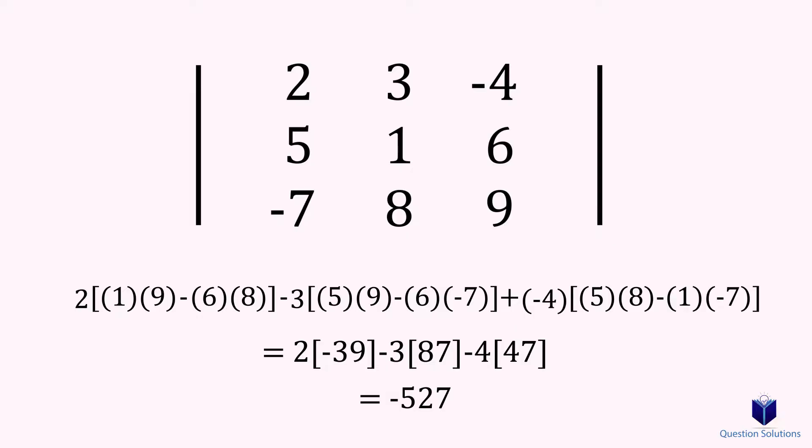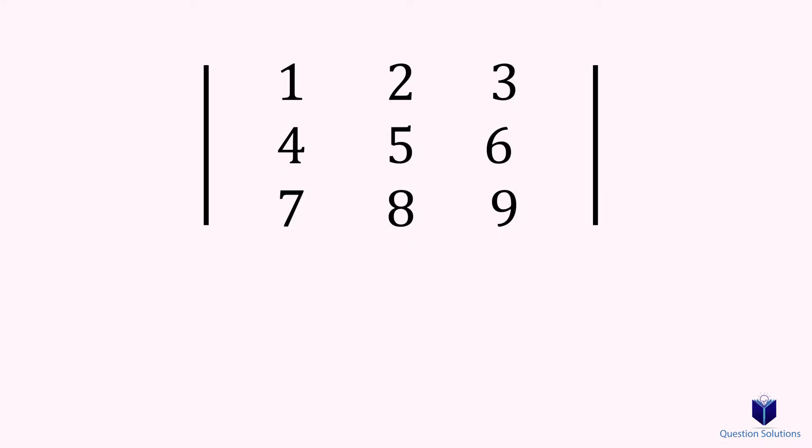Let's look at another example. I will go through it faster now. As before, cover the row and column. Intersecting number is 1, and we start at a positive sign. Then we cross multiply the uncovered numbers. Top left to bottom right, then top right to bottom left. Remember, these are always subtracted from one another.